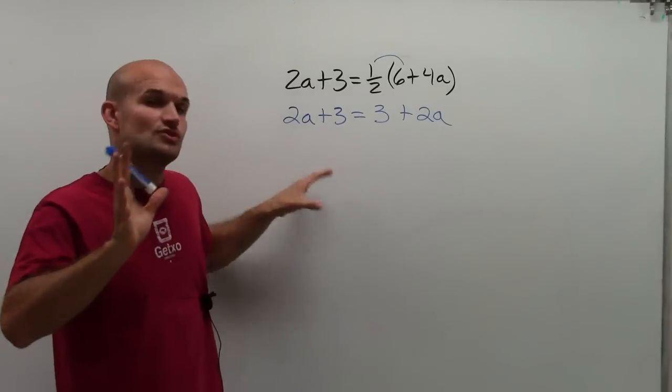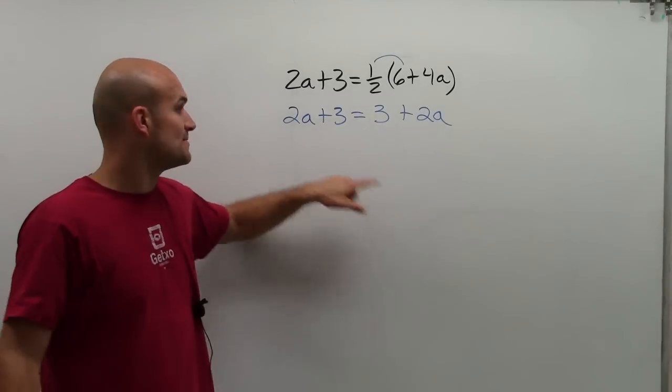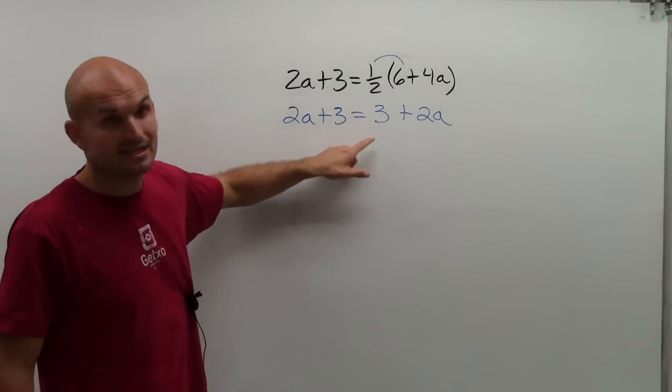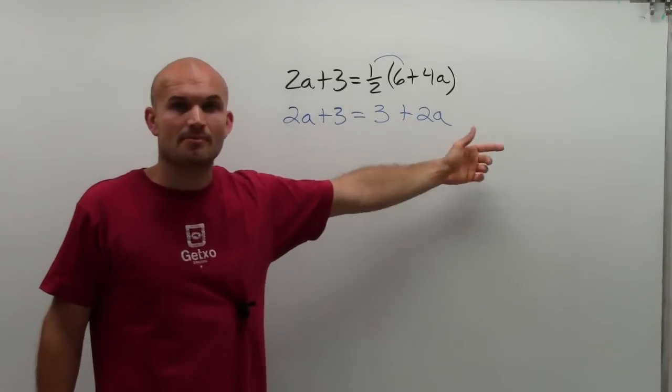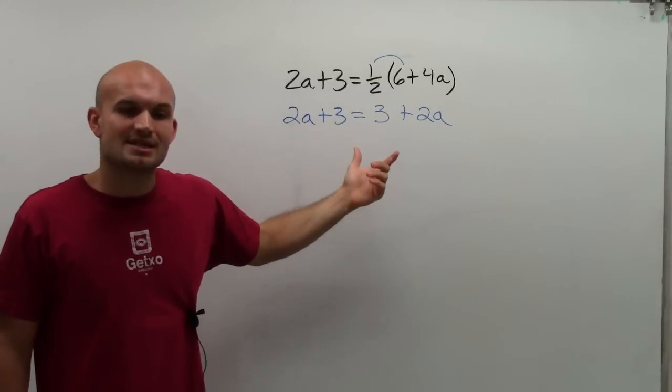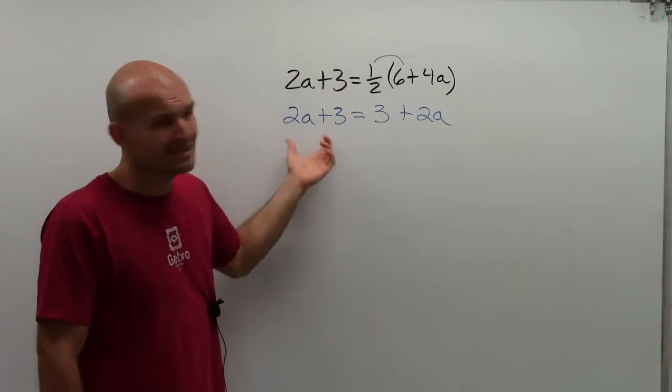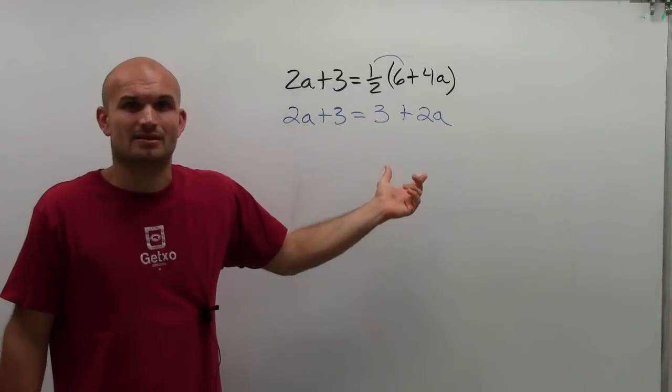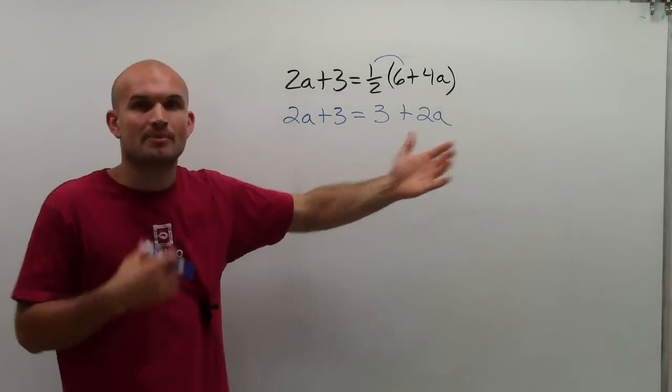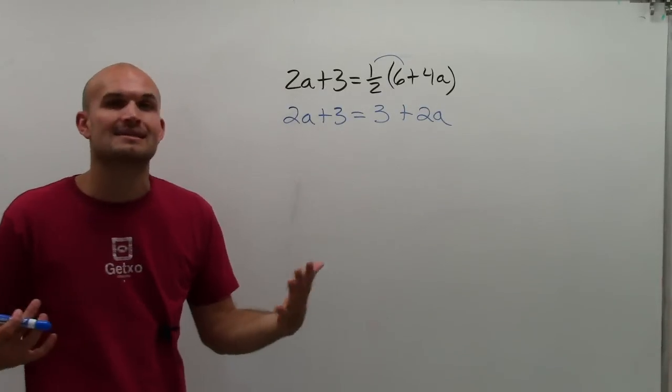Let's just read this out loud as a translating equation. 2 times a number plus 3 is equal to 3 plus 2 times a number. Well, since the commutative property is true for addition, this is the exact same thing, right? It doesn't matter if you add 3 or 2 times a number. Either way, you're going to get exactly the same answer.